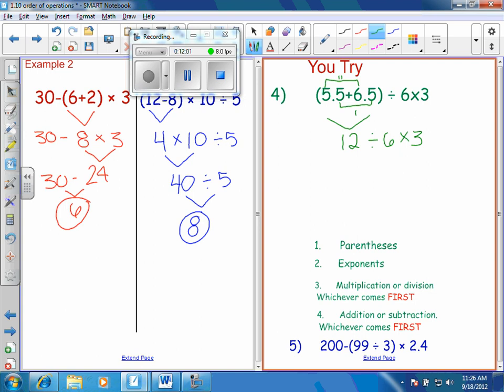Now, you've taken care of parentheses. There are no exponents. Is there multiplication or division? Yeah. Which one comes first? Division. So we're going to do the division first. So 12 divided by 6, Sam? 2. So put a 2 in here. Bring down the multiply. 2 times 3 is 6. You said it? You read that correctly. I know. Okay.